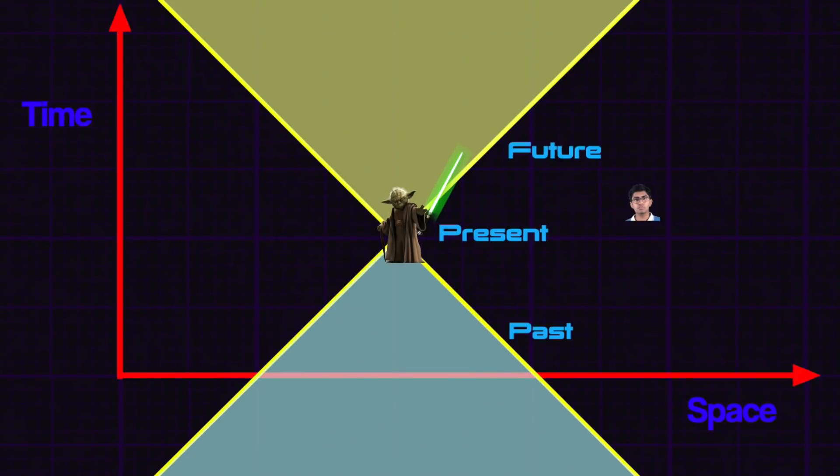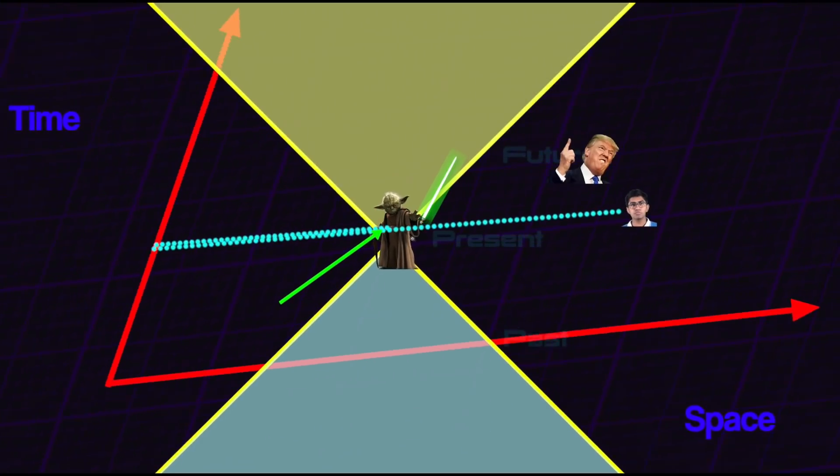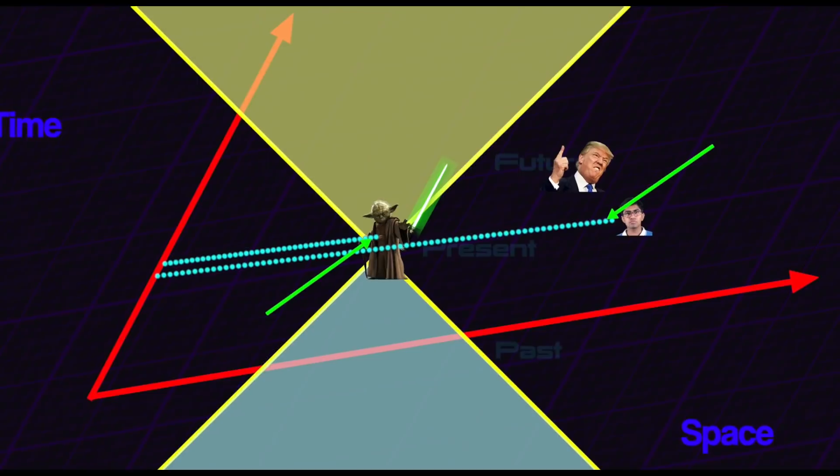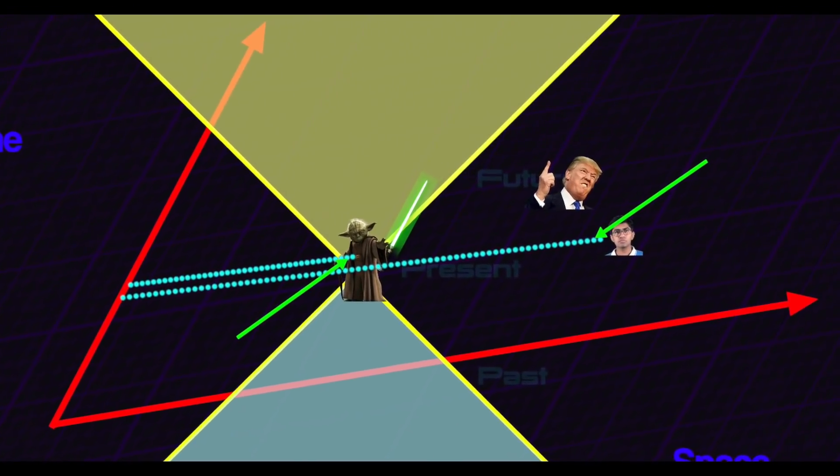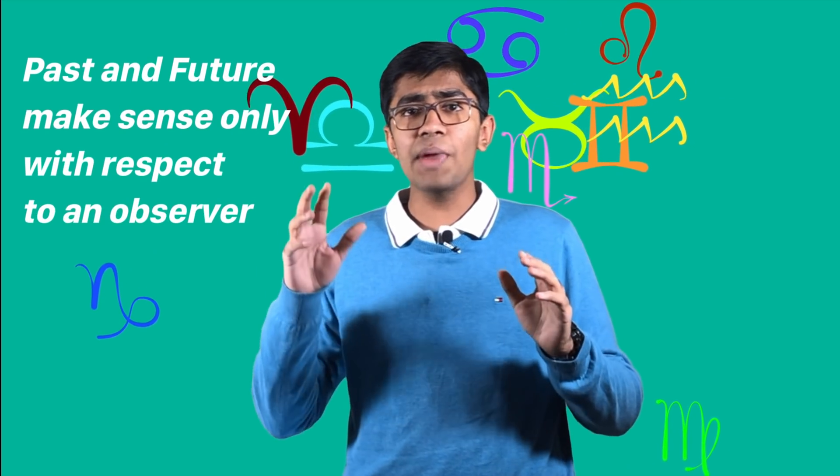But if I am outside your future light cone, these distinctions between the past, the present and the future are pointless. Because in another observer's reference frame, the cause could be after the effect as shown by the transformation here. You've lost it! How can one person's past be another person's future? I just showed how that's possible! The past and the future only make sense with respect to an observer or the observer's present.